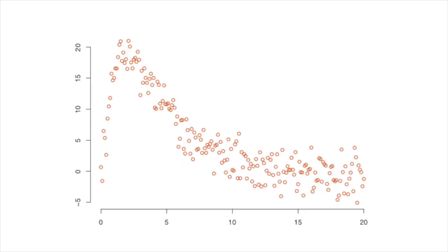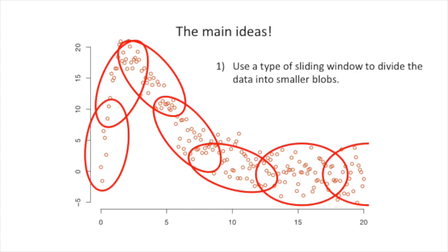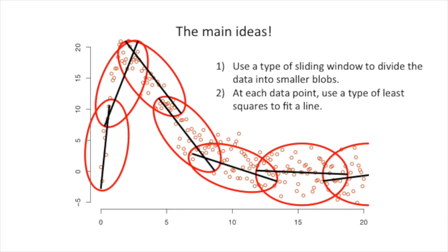Today we're going to talk about fitting a curve to data. Let's go over the main ideas first. The first main idea is to use a type of sliding window to divide the data into smaller blobs. The second main idea is, at each data point, use a type of least squares to fit a line.